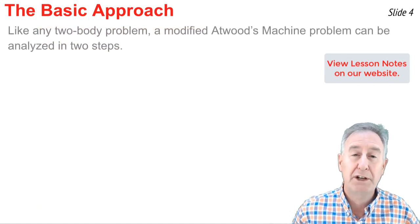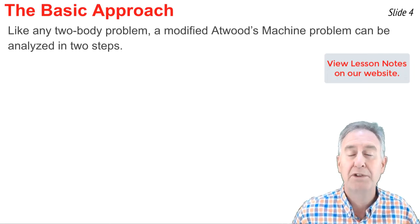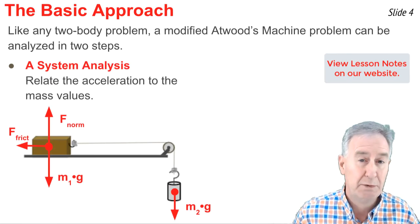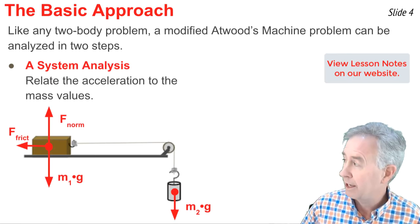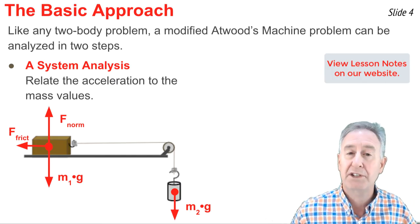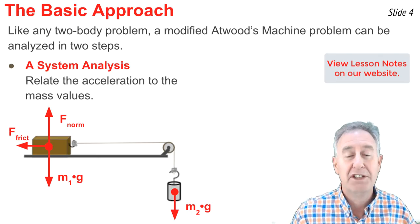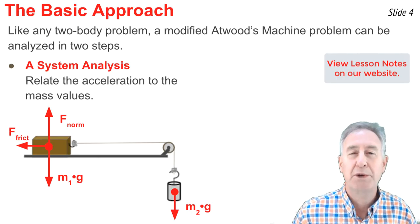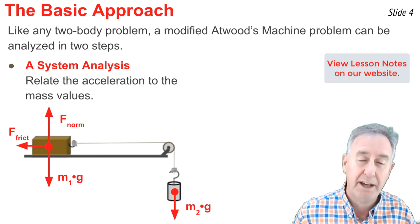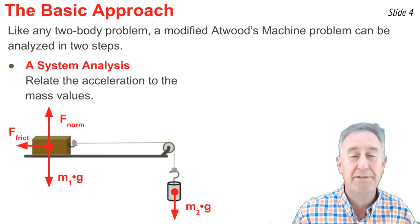What we learned in those videos is that there's a basic approach to two-body problems that can be used for a modified Atwood's problem. The approach involves two separate analyses. The first is a system analysis, where we think of the two objects as a system that moves together as a single object. The mass of the system is simply the sum of the masses of the two objects. We draw a free body diagram and apply F_net = ma to relate mass to acceleration.